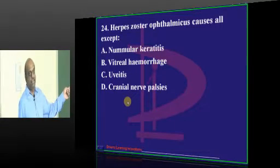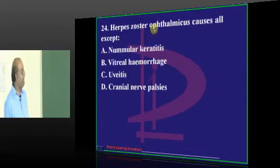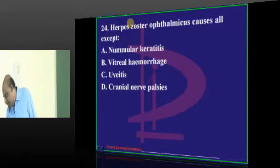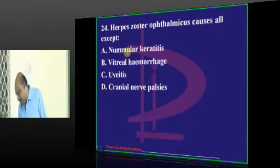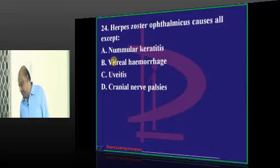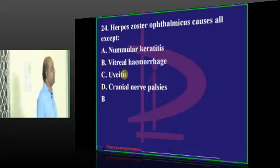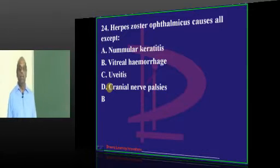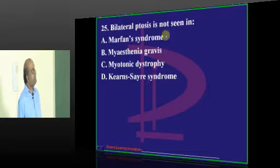Some say D — cranial glaucoma. Consider that Herpes Zoster Ophthalmicus, by its very name, involves the ophthalmic division of the trigeminal nerve. The correct answer is B — it leads to nummular keratitis, uveitis, and cranial nerve palsy, but not bilateral ptosis.